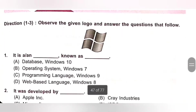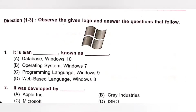Observe the given logo and answer the questions that follow. First one: It is a dash known as dash. Option A: Database, Windows 10. Option B: Operating System, Windows 7. Option C: Programming Language, Windows 9. Option D: Web Based Language, Windows 8. The given logo is Windows 7 Operating System. It acts as an interface between user and the computer hardware. It is an operating system known as Windows 7. Option B is the correct answer.